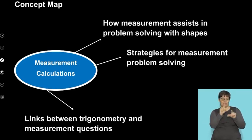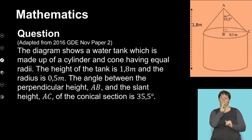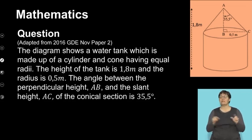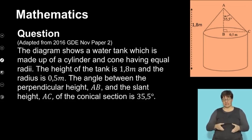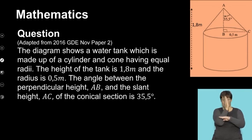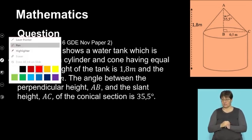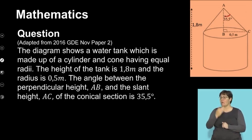We are first going to have a look at this question. The diagram shows a water tank which is made up of a cylinder and a cone having equal radii. Equal radii means the cylinder has a radius of 0.5 meters and the cone has a radius of 0.5 meters. The angle between the perpendicular height AB and the slant height AC of the conical section is 35.5 degrees — that is this top angle labeled over here.